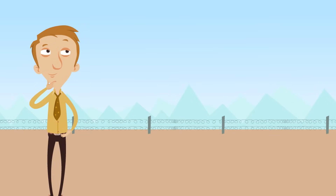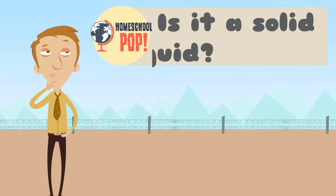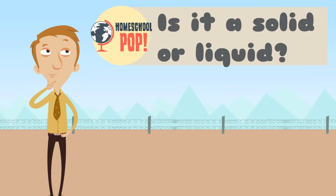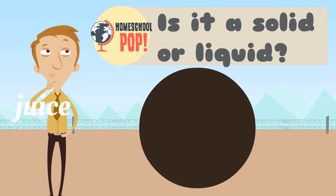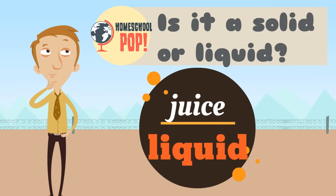I think you're ready to handle this. We're going to play a quick game and figure out if these items are solid or liquid. I hope you'll participate because we need to figure this out. Our first one: juice. Solid or liquid? Yeah, juice is a liquid — it takes the shape of its container.